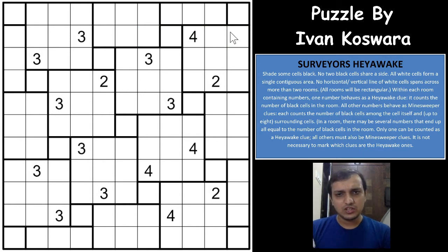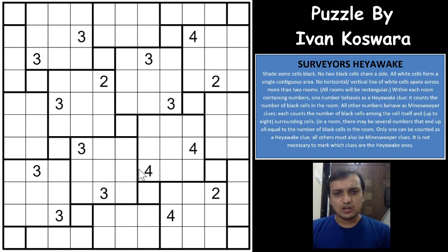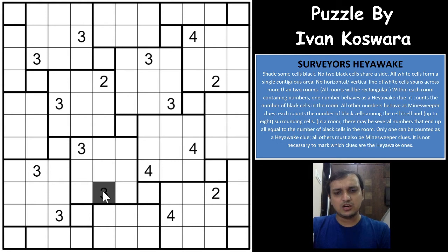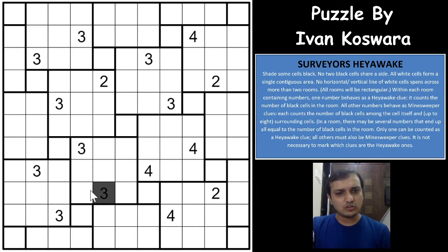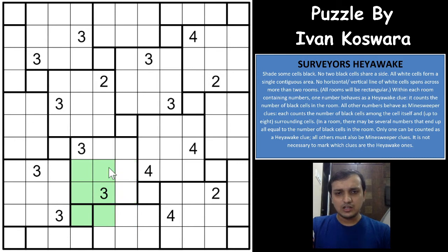The Minesweeper rule, as you know, requires you to place some mines in the grid such that the number indicates the count of shaded cells or mines in the 9 corresponding cells, including the numbered cell itself — particularly for this puzzle, including the numbered cell. In a usual Minesweeper puzzle, numbered cells are not shaded, but in this puzzle you can shade the numbered cells. So a number indicates how many of the surrounding 9 cells will have mines.